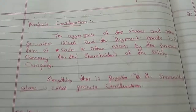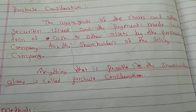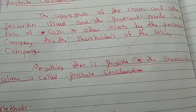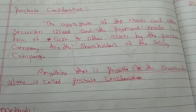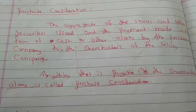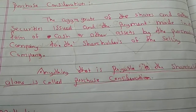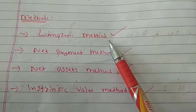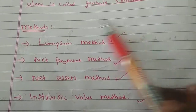So in the four methods, one of them is used to determine the purchase consideration — the amount payable when one company takes over another. The purchase consideration is payable and may be in the form of cash or any other asset. There are four methods: Lumpsum method, Net Payment method, Net Asset method, and Intrinsic Value method. Now let's look at the details of each method.